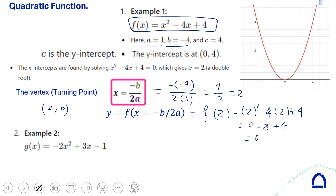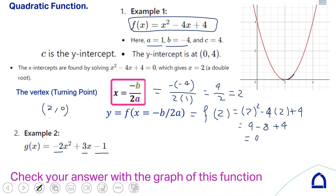Graphing this, the x-intercept is only at x = 2, and the turning point is also at (2, 0), so the parabola opens upward from both sides. In this case the turning point is a minimum value of the function. For the second example, you can identify A, B, and C — where C is the y-intercept — and follow the same steps.